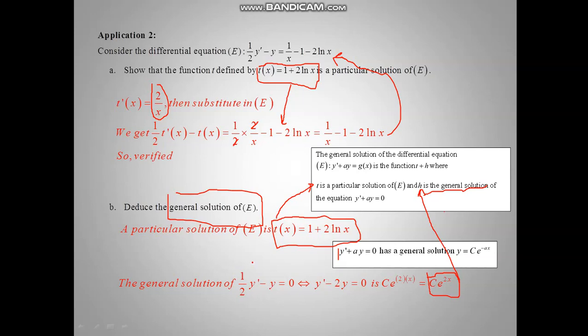To find the general solution of E, we simply add the particular solution T to the general solution of the reduced equation H equal c e to the 2x. The general solution of E is the sum of the general solution of the reduced equation and the particular solution of equation E.